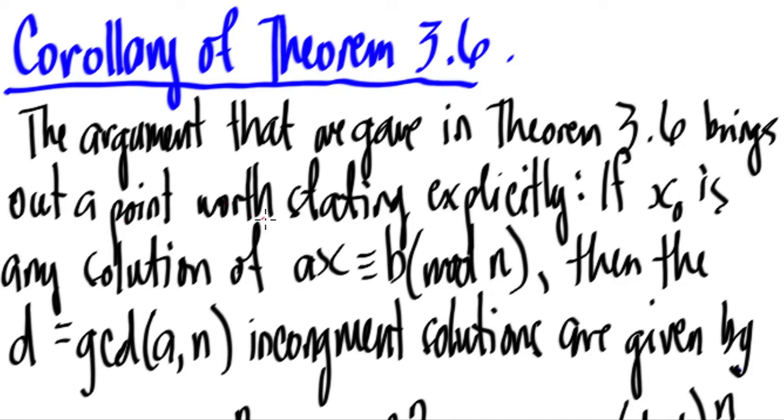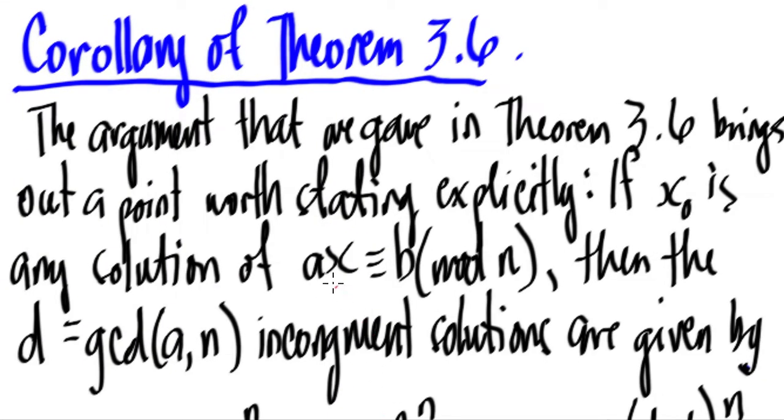This brings out a point worth stating explicitly: If x₀ is any solution of ax ≡ b (mod n), then the d = gcd(a,n) incongruent solutions are given by these.